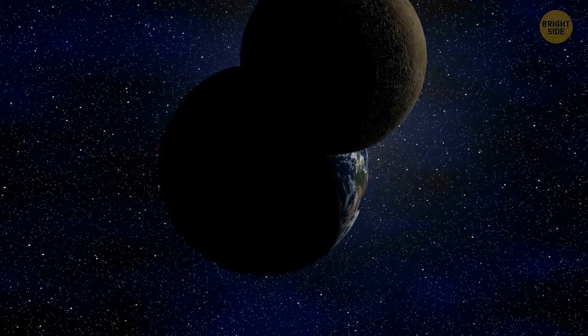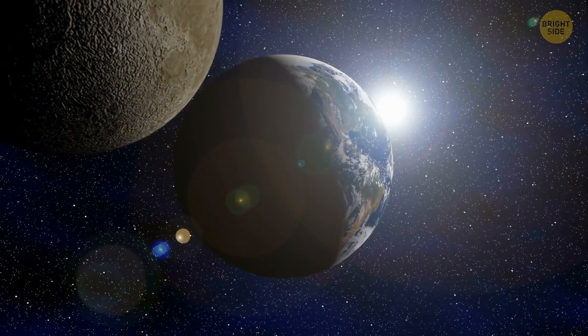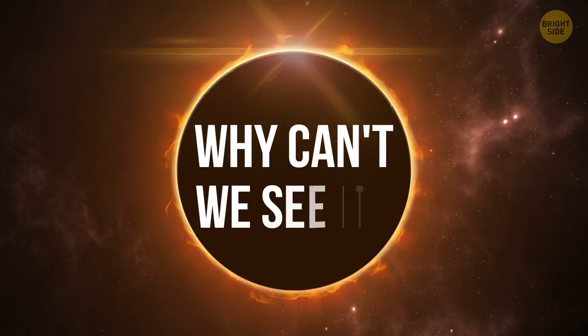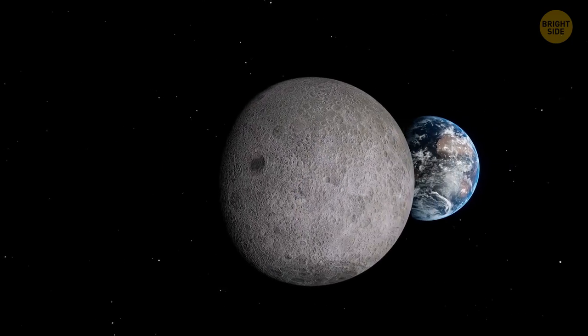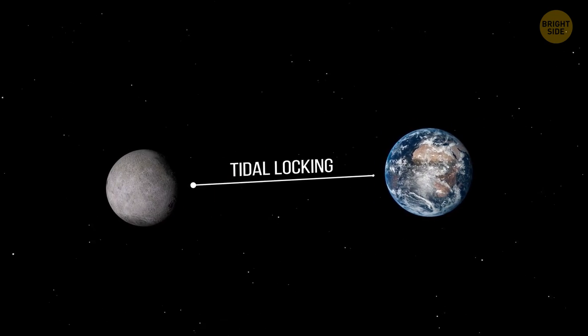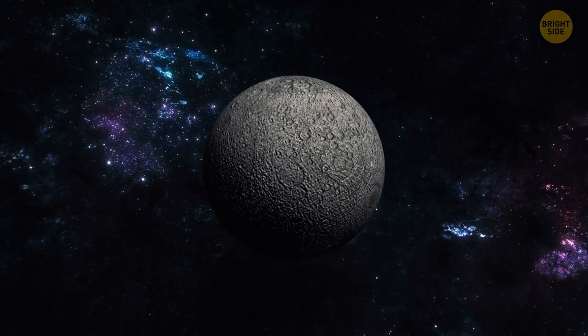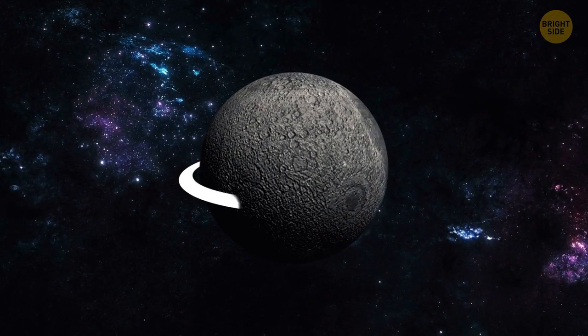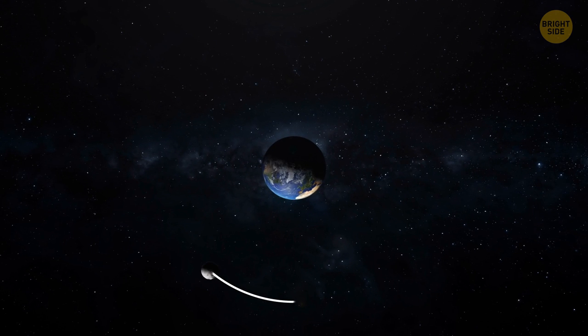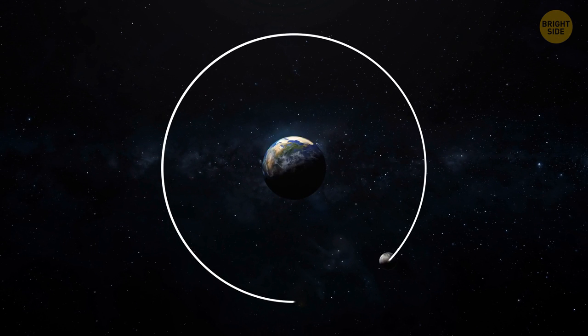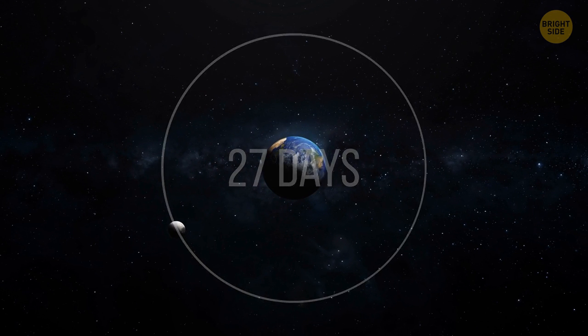But what's so special about this dark side of Earth's natural satellite? And why can't we see it? It's all because of the phenomenon known as tidal locking. Earth's only natural satellite rotates around its axis once in 27 days. It's the same amount of time it needs to go round our planet. That's why you always see the same face.